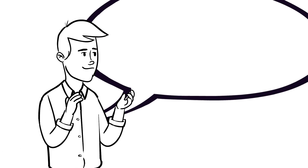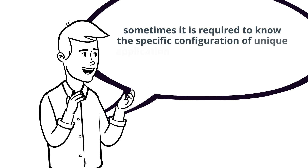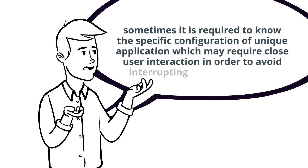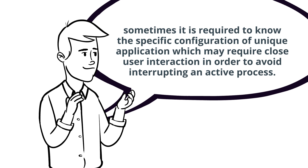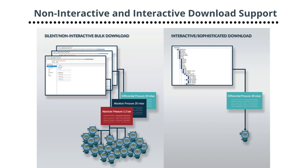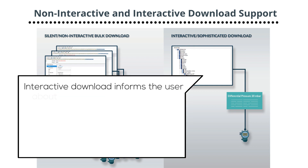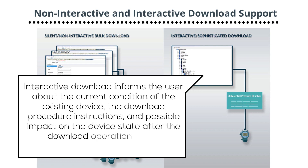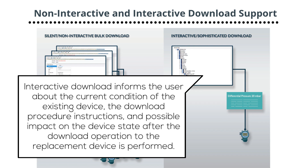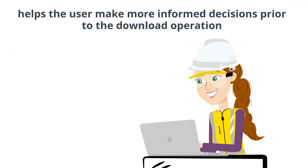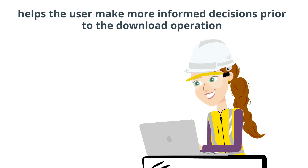However, sometimes it is required to know a specific configuration of a unique application, which may require close user interaction in order to avoid interrupting an active process. This is called interactive download. Interactive download informs the user about the current condition of the existing device, the download procedure instructions, and the possible impact on the device state after the download operation to the replacement device is performed. This helps the user make more informed decisions prior to the download operation.